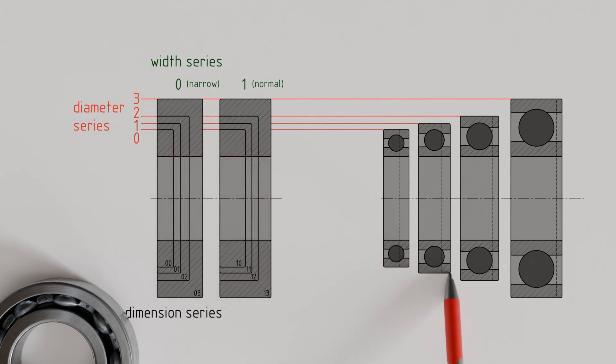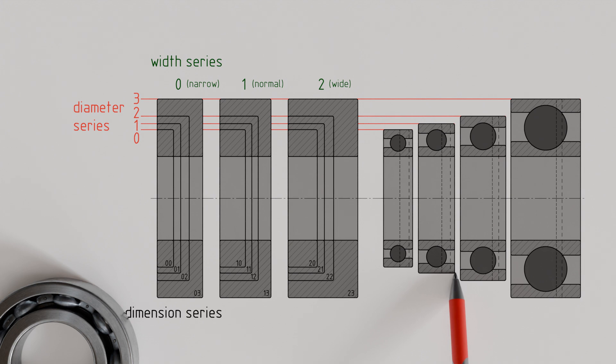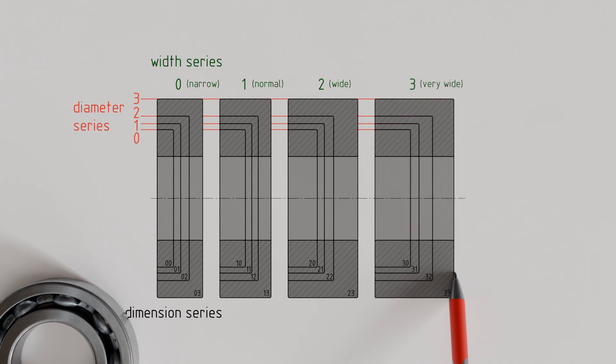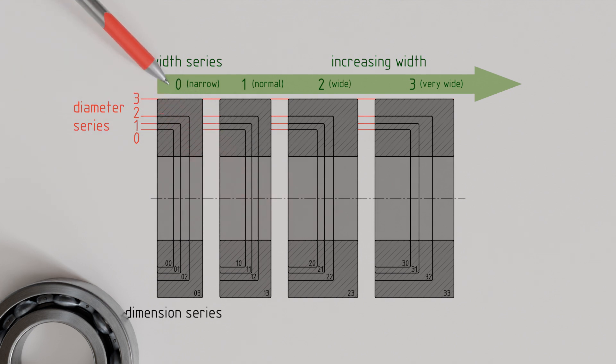Bearings of width series 2 are designed to be somewhat wider compared to the other series. Even wider are the bearings of width series 3. Such wide bearings are used for example in heavily loaded bearings or in double row bearing designs. In summary, it can be stated that the width series describes the bearing width. This is smallest in width series 0 and increases steadily through 1 and 2 up to 3.